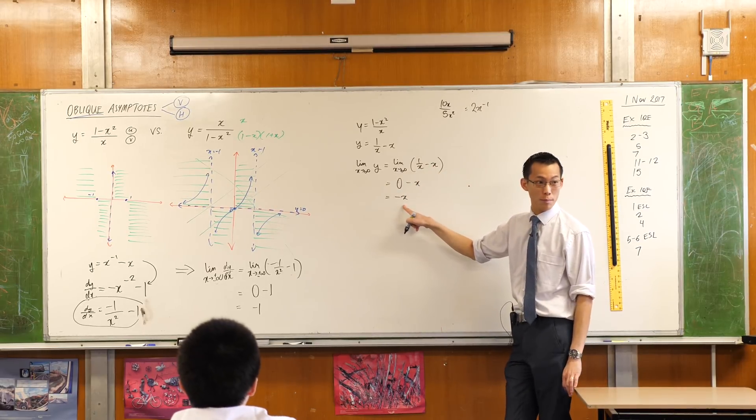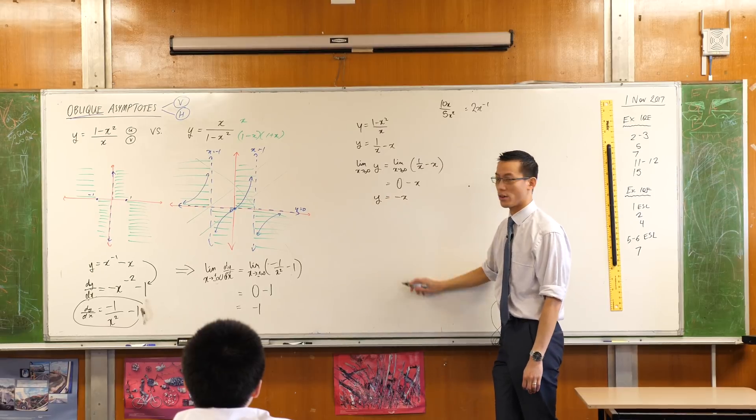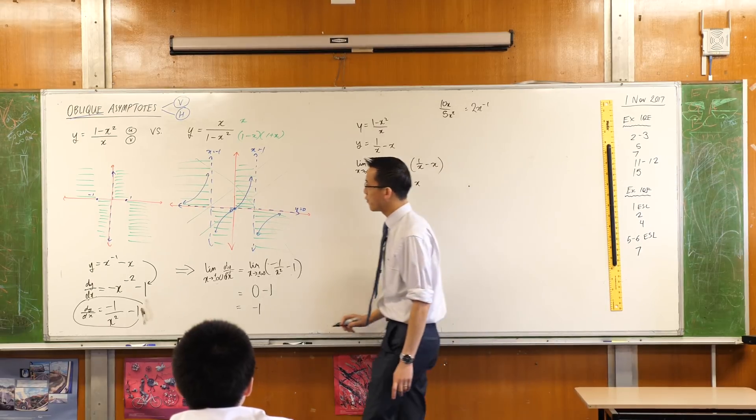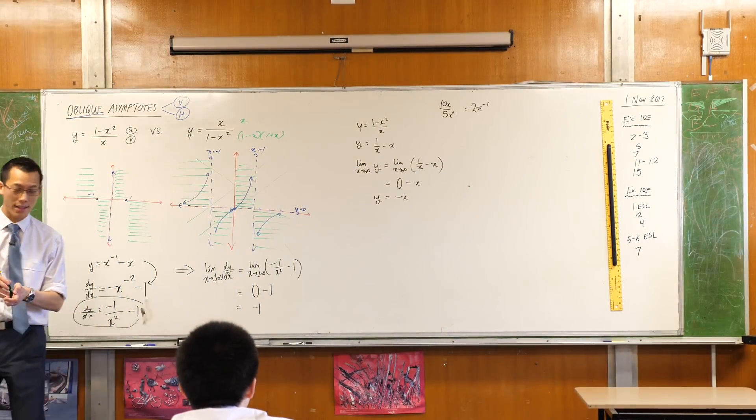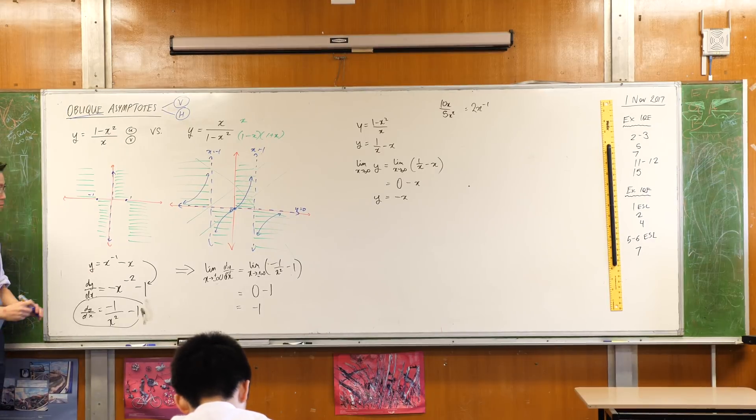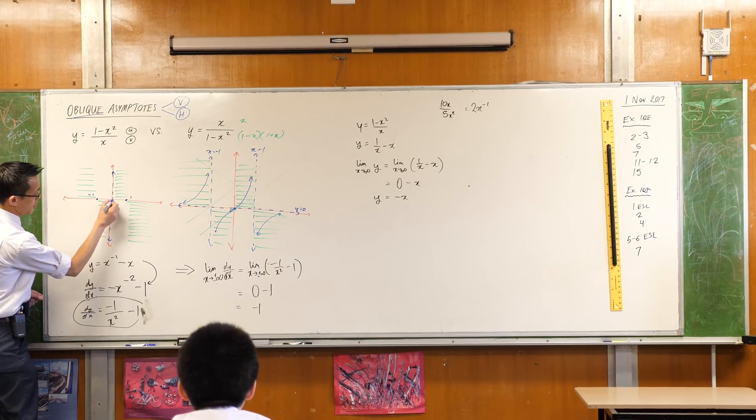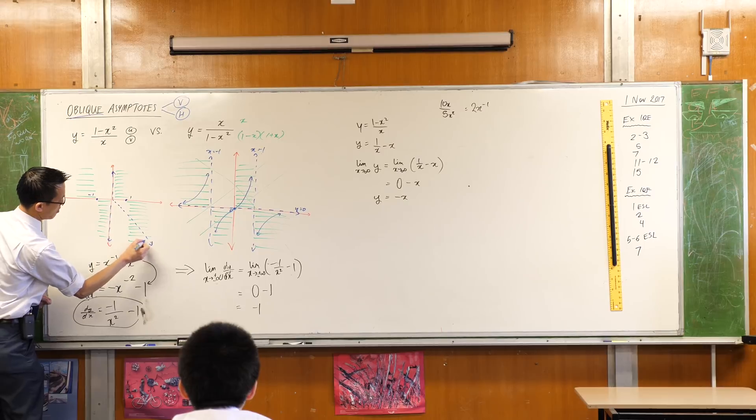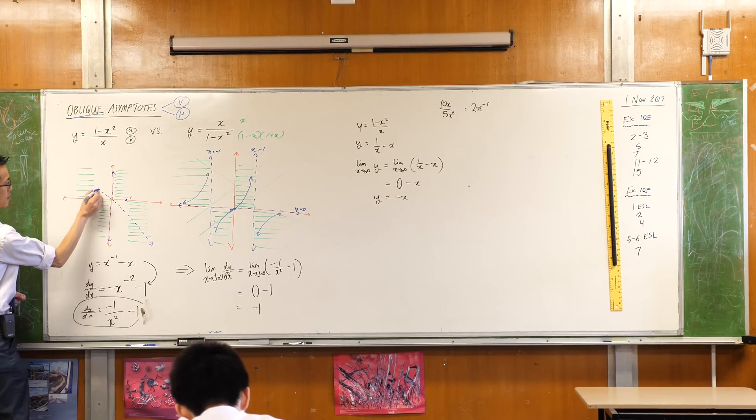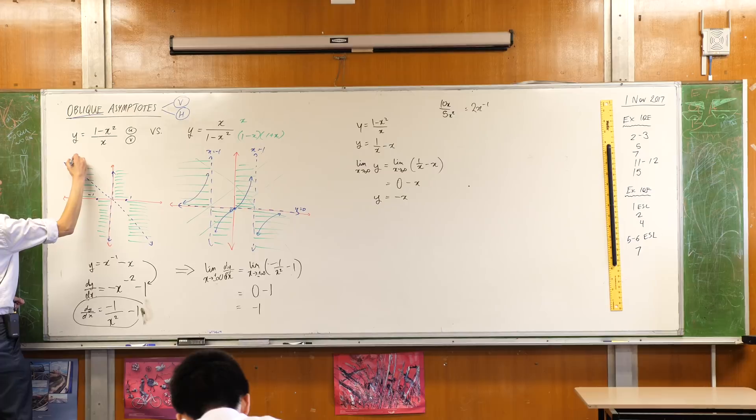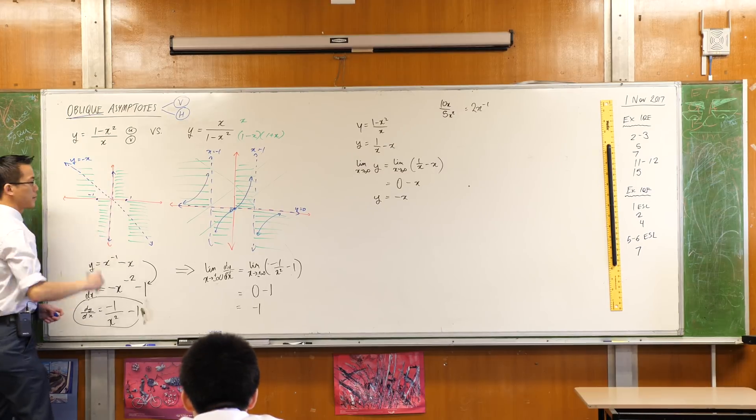So all you get left with is this guy. This is your oblique asymptote. y equals that, okay? So therefore, I can now come back to my original graph at last, and I can put on my oblique asymptote, like so. This is y equals minus x.